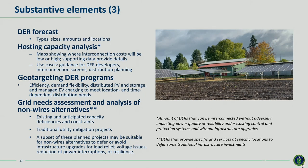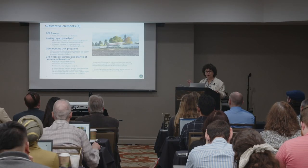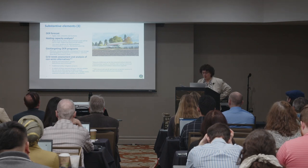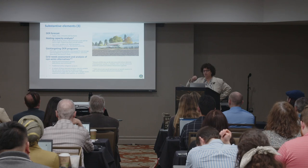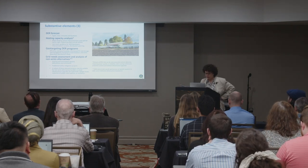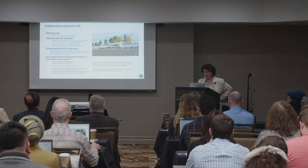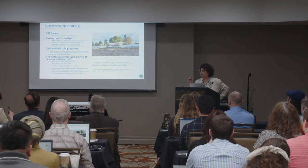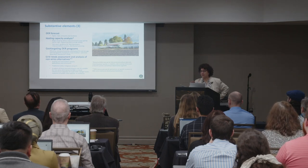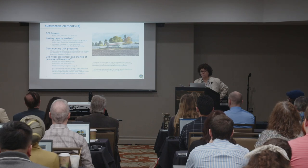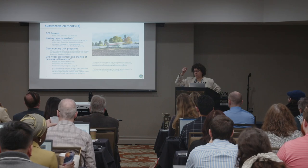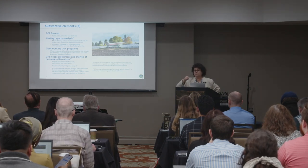Distributed energy resources are one of the drivers for states requiring utilities to file distribution plans. Forecasting distributed resources and assessing the distribution system's hosting capacity — the ability for the distribution grid at a particular spot to host additional solar or EV charging — are really important components of distribution planning today. I also want to highlight geo-targeting the programs that rate payers are already funding — efficiency, demand response, storage, solar — to test using those programs to help meet distribution needs, getting more bang for your buck by offering slightly higher incentives for resources that will help meet distribution system needs.